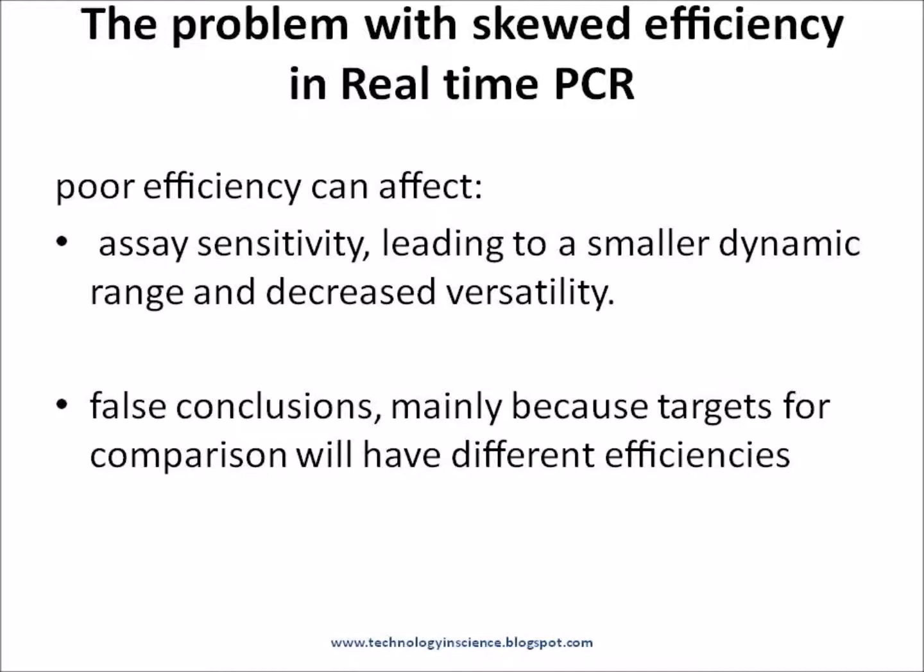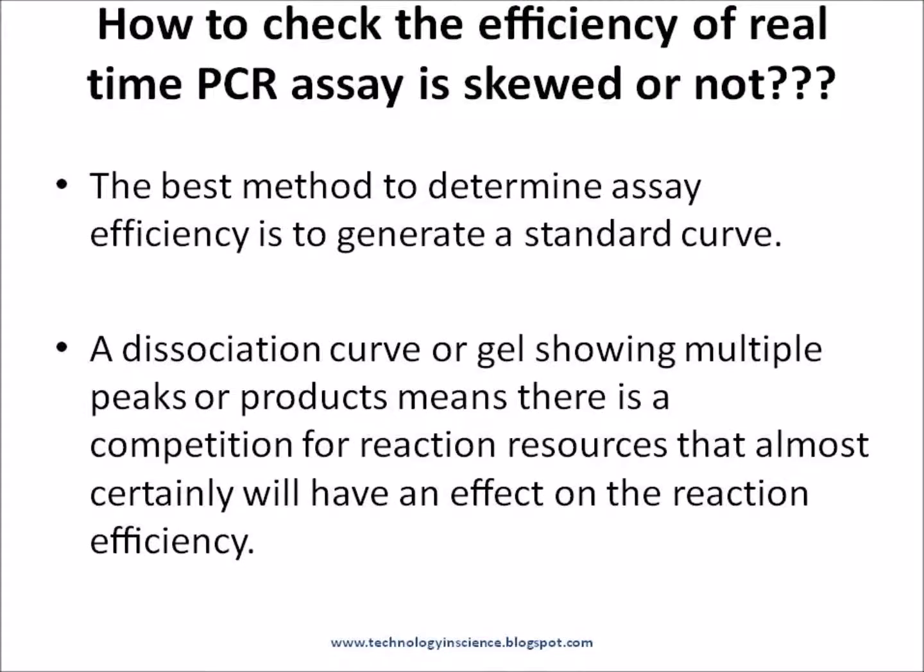Efficiencies outside the range of 90% to 105% may artificially skew results and lead to false conclusions, mainly because targets for comparison will have different efficiencies. In addition, inhibition and poor efficiency can affect assay sensitivity, leading to a smaller dynamic range and decreased versatility.